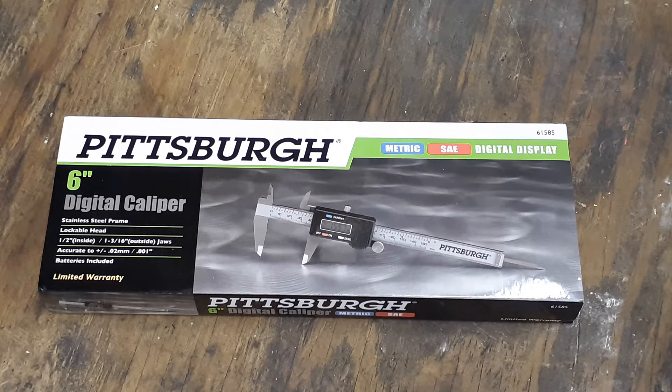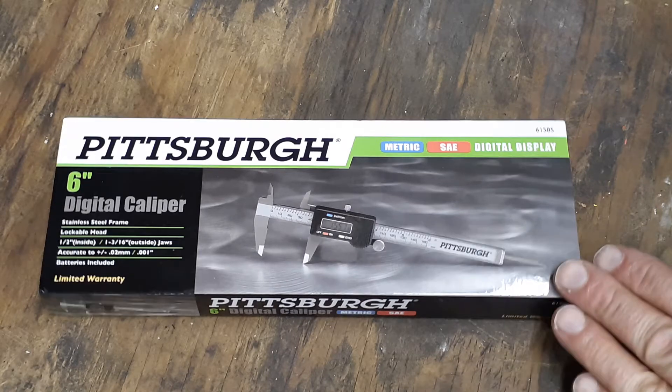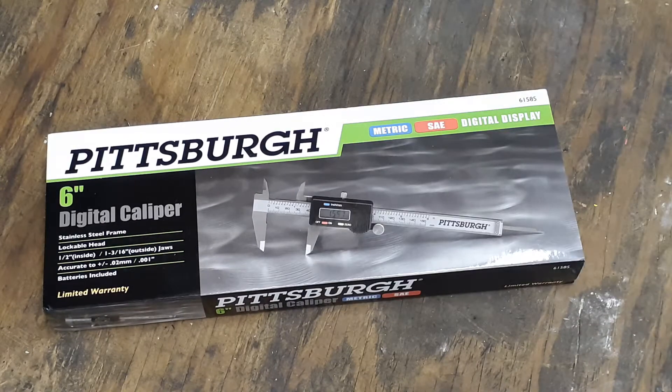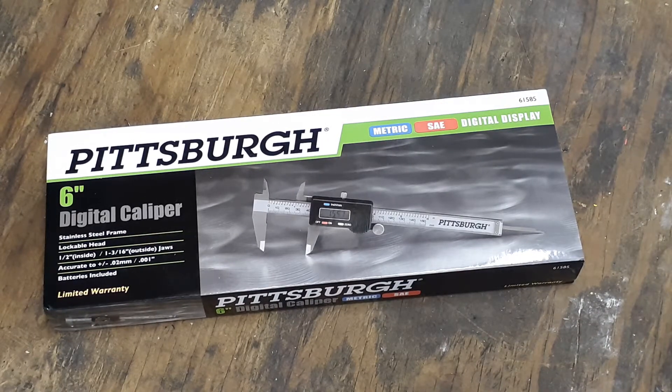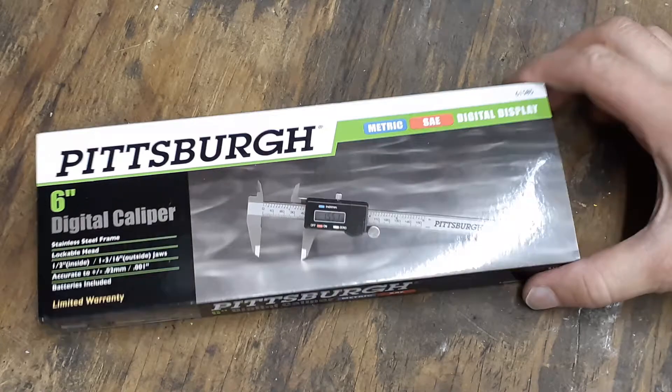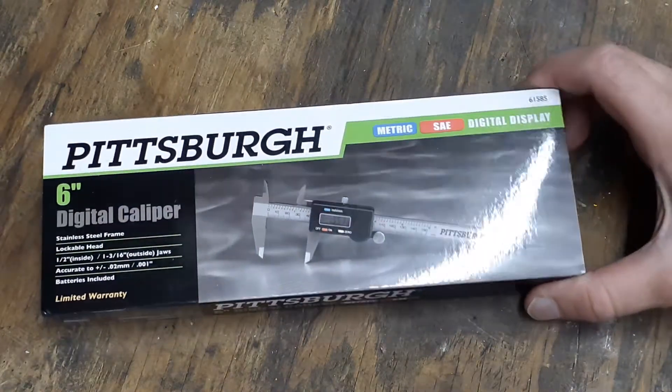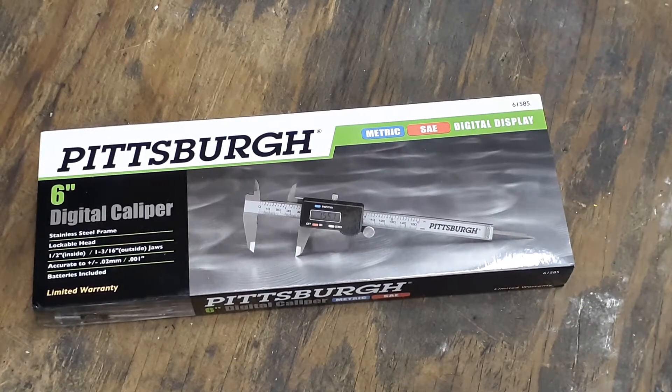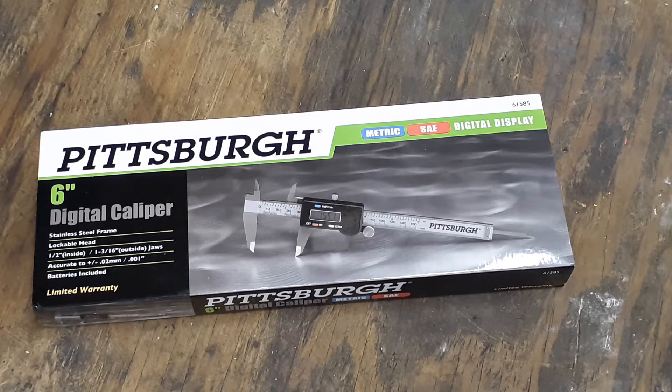I believe they're Pittsburgh, and I got some other ones at work too, but I do have a pair of Pittsburgh ones at work. Anyway, these are six inch. These do metric, standard or SAE, digital display. The part number is 61585. These are originally $19.99. I believe I saw them on Harbor Freight yesterday, they're on sale for $16.99, so I picked them up.